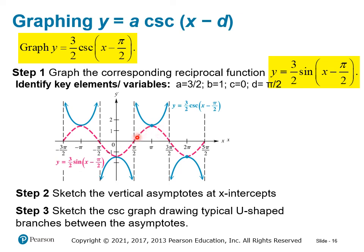We've drawn the reciprocal function — in this case the sine function — with a dashed line. We've indicated all the vertical asymptotes where that reciprocal function crossed the x-axis. Then we've drawn our parabolas — smiles and frowns — above and below the x-axis, intersecting with maxes and minimums. These are pretty straightforward to graph as long as you are comfortable graphing sine and cosine, which is handled in Section 4.2.